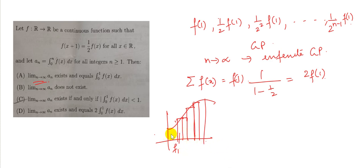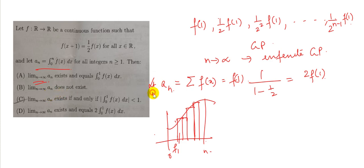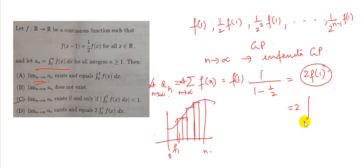The area under the curve from x = 0 to x = n is a_n, which equals the summation of all terms of f(x). Therefore, as n tends to infinity, the limit of a_n equals 2f(1), which means 2 times the integral from 0 to 1 of f(x)dx. So the answer is option D.